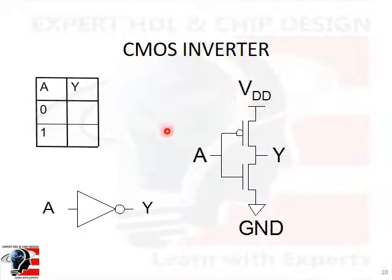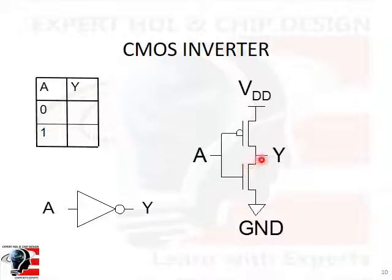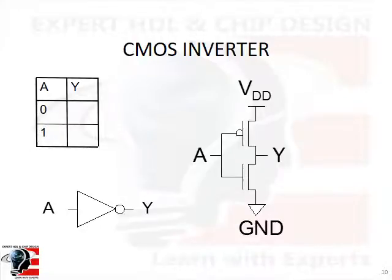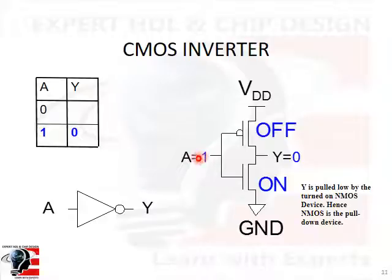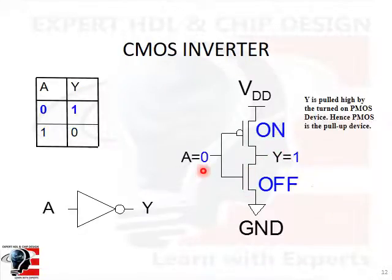A CMOS device is a perfect switch. For example, a CMOS inverter consists of an NMOS device and a PMOS device connected together. The gate terminals are shorted and connected to the input; the drains are shorted and connected to the output. The source of the PMOS is connected to the power supply (VDD) and the source of the NMOS is connected to ground. When the input is high, the NMOS is on and the output Y is pulled down to zero. When the input to the inverter is low, the PMOS is on and Y is pulled up high to VDD.